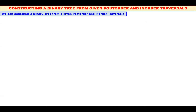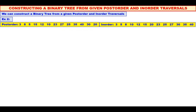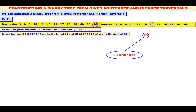Now let us take one more example. In this example, this is our post-order and this is our inorder. Which is the root of the tree? See the post-order — the last element should be the root. Therefore, 20 is the root of the binary tree. We will mark 20 in the inorder also. All the elements to the left of 20 should be in the left sub-tree, and all the elements to the right of 20 should be in the right sub-tree.